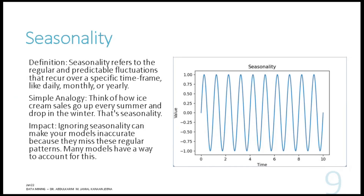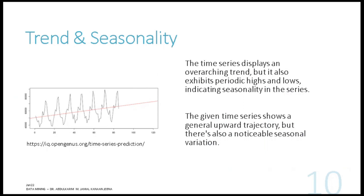Seasonality refers to a repetitive pattern over time, or predictable fluctuation over time. The data fluctuates up and down, but it is predictable because the same pattern is repeated over and over. You need to look at your figure during data exploration to see whether you have seasonality and what its period is — every three months, every six months, every one year. This matters because when you split your data into training, validation, and test sets, you need complete seasonal cycles in each portion.